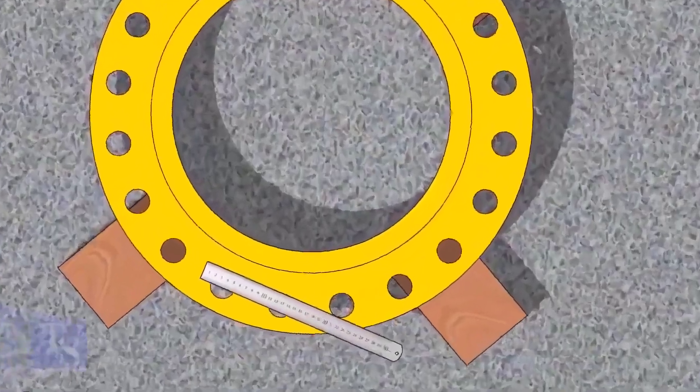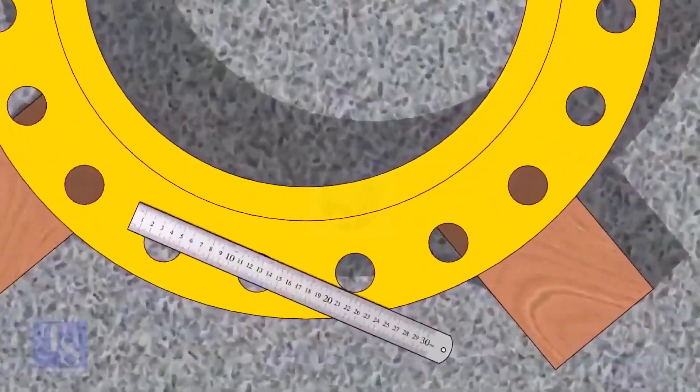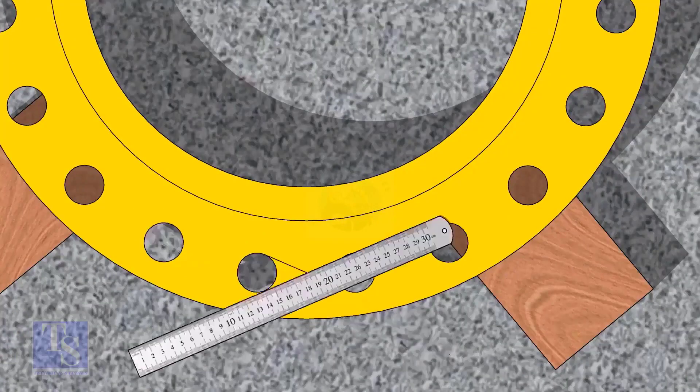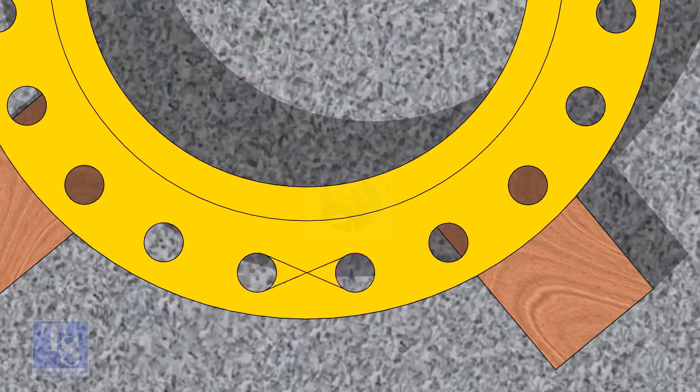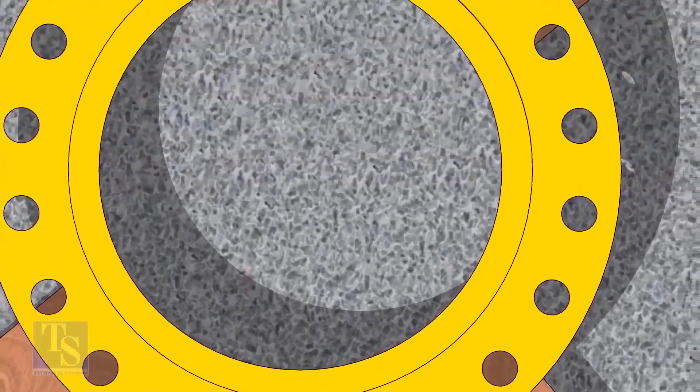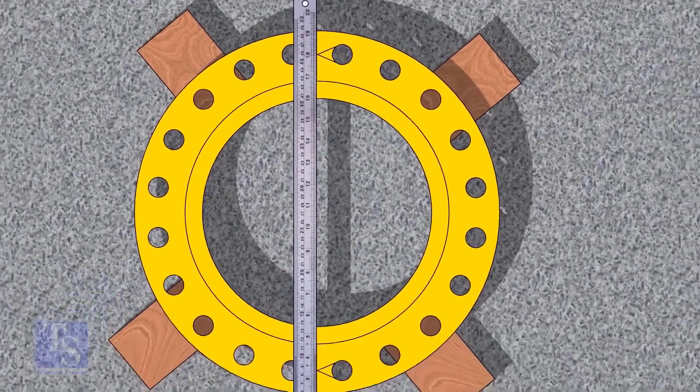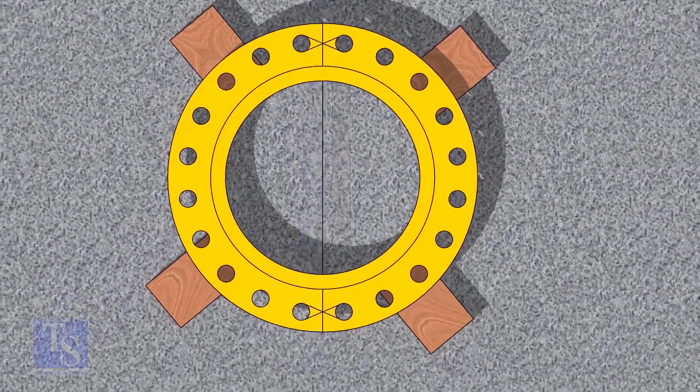Let us mark the center line of the flange. Draw tangential lines of two adjacent holes. The intersection of the lines is the center of these holes. Draw the center of the two holes on the opposite side. Draw the center line of the flange as shown.